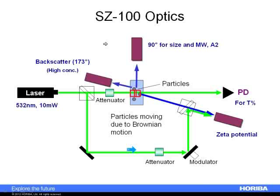This is an optical diagram of the SZ100. We have a light source — a green 10 milliwatt laser. The sample sits in the cell, and we can measure either at the center or near the side wall of the cell, depending on the concentration and at what angle we get more effective scattering for the given particle system. We can measure particle size at both 90 degrees and backscatter — the only instrument on the market capable of doing that. We also use the same instrument to measure zeta potential.